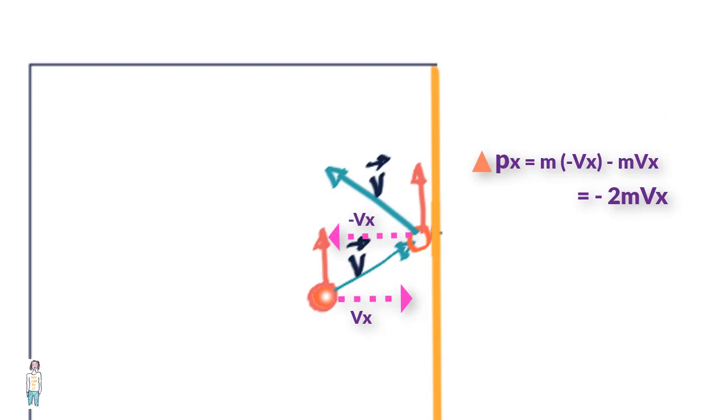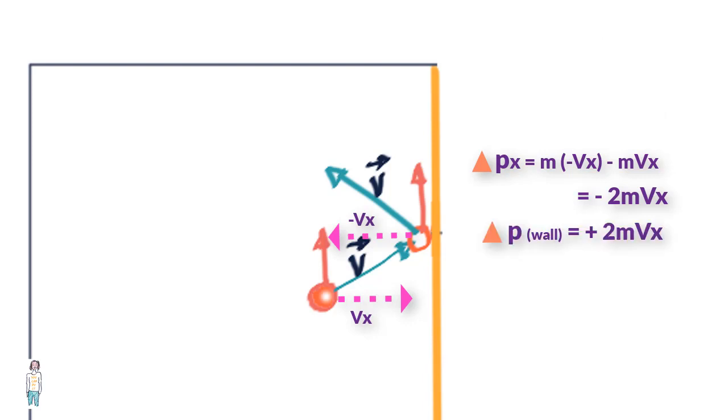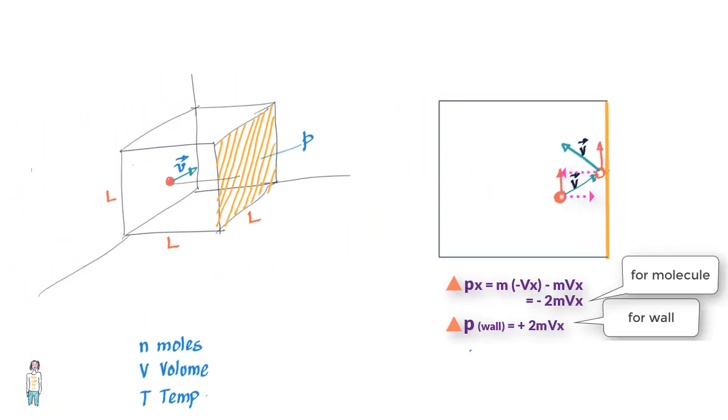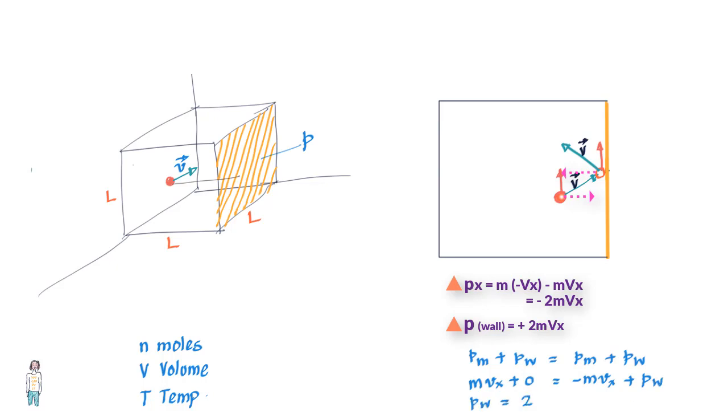Hence the momentum delivered to the wall is plus 2mvx assuming momentum is conserved. The momentum of the molecule plus the momentum of the wall before the collision should equal the momentum of the molecule plus momentum of the wall post collision. The equation we get is mvx plus 0 equals minus mvx plus the momentum of the wall post collision, and we see that the momentum of the wall equals 2mvx. I would like you to be careful and note that the p here is representing momentum not pressure.